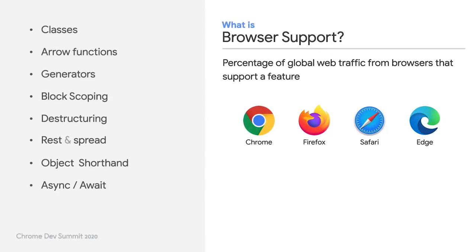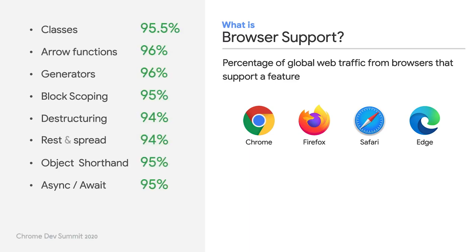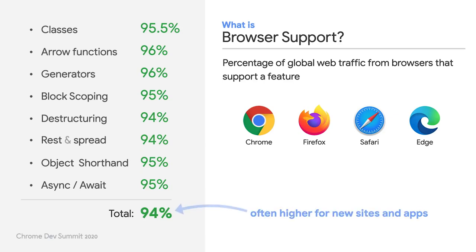We're using the term browser support quite often, and it's worth clarifying what that means. You can think of browser support as a percentage of global web traffic from browsers that support a given feature. To get a full picture of modern JavaScript browser support, we can take the lowest common denominator of the features we just saw, and we can see that all these features are supported in 94% of browser traffic. This is even higher for newer sites and apps — for example, 97% for visitors only from the US.